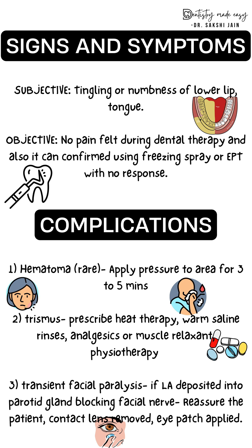Complications: the first is hematoma — swelling of the tissues on the medial side of the mandibular ramus. Apply pressure to the area for 3 to 5 minutes; this is very rare with the inferior alveolar nerve block. The next is trismus — a slight degree of soreness when opening the mandible, which is very common with this block. Treatment includes heat therapy, warm saline rinses, medication, and physiotherapy.